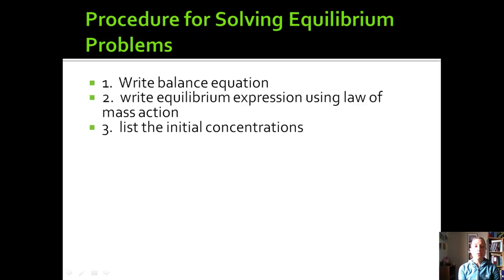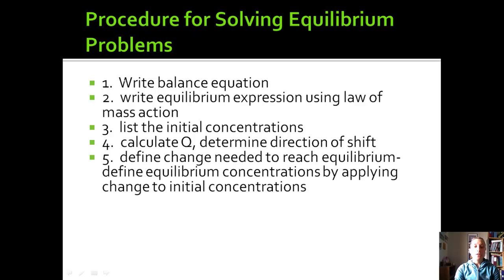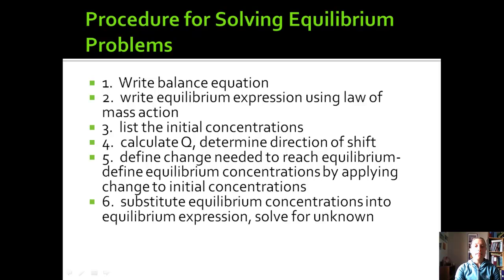List out your initial concentrations, so do the I part of ICE. Calculate Q if you need to determine the direction of shift, and we will talk about whether or not that's necessary. Then define the change needed to reach equilibrium.